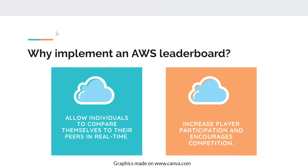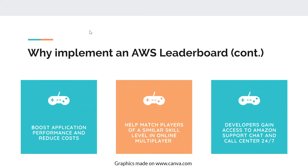So why would you implement an AWS leaderboard? AWS leaderboards allow individuals to compare themselves to their peers in real time. They also increase player participation and encourage competition among players. Additional reasons include that they boost application performance and reduce costs. They help match players of similar skill levels in online multiplayer, which improves the experience for both skilled and non-skilled players. Developers also gain access to Amazon support chat and call center 24/7.